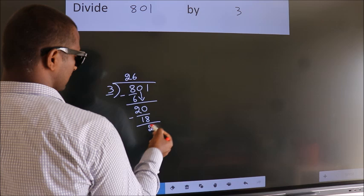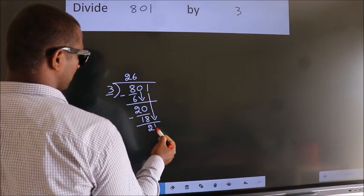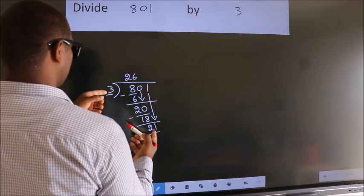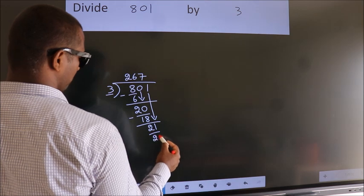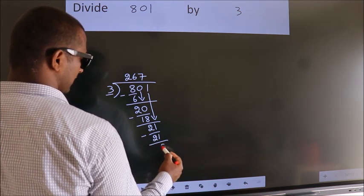After this, bring down the beside number. So, 1 down. So, 21. When do we get 21 in the 3 table? 3 times 7 is 21. Now we subtract. We get 0.